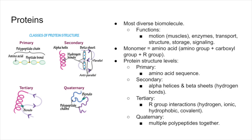Proteins have four levels of structure. The primary structure is just the amino acid sequence. The secondary structure forms alpha helices and beta sheets through hydrogen bonding. The tertiary structure results from interactions between R groups, like hydrogen bonds, ionic bonds, hydrophobic interactions, and sometimes covalent bonds like disulfide bridges. Finally, the quaternary structure occurs when multiple polypeptide chains come together to form a functional protein.